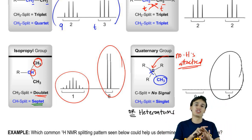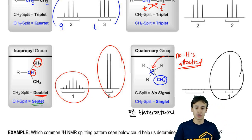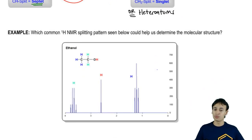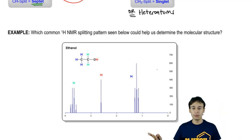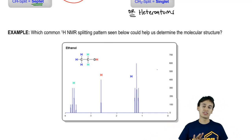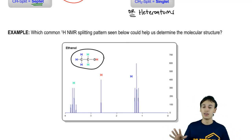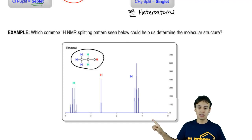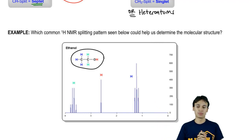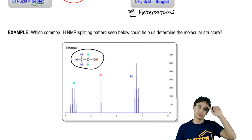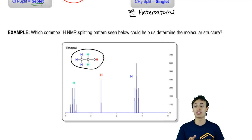That's really it — those are the common splitting patterns we're going to use for structure determination. Just as a quick example, here's a sample NMR. Is there a common splitting pattern seen here that could help us deduce the structure of the molecule? Notice I included the structure, so that's a huge hint. But just by looking at the signals and the types of signals, could we already deduce some things about this molecule? We'll do this as a worked example — let's just talk about it.